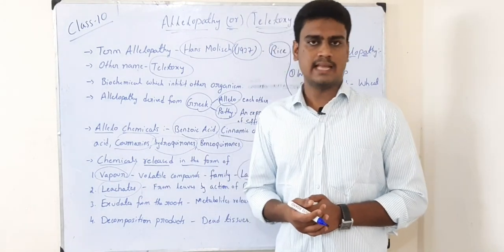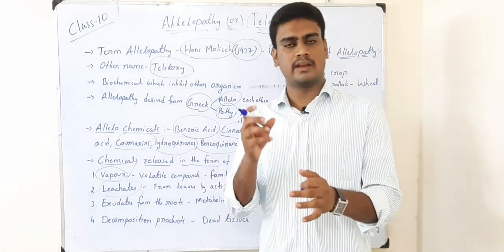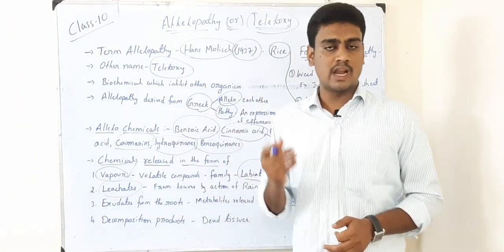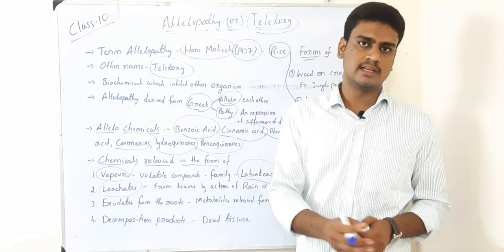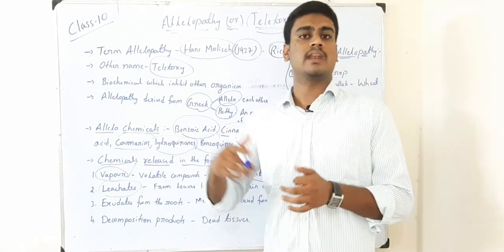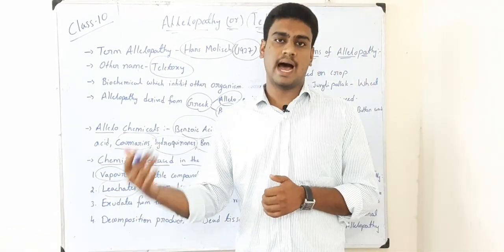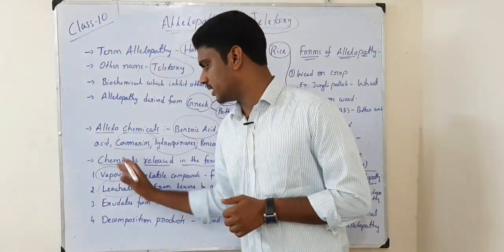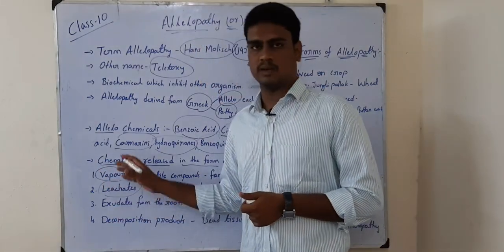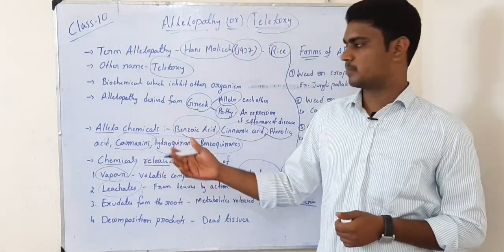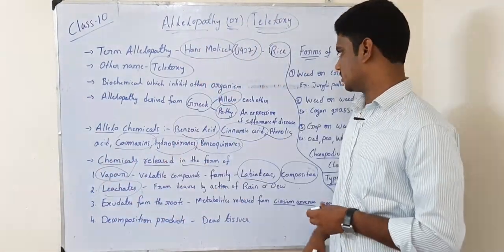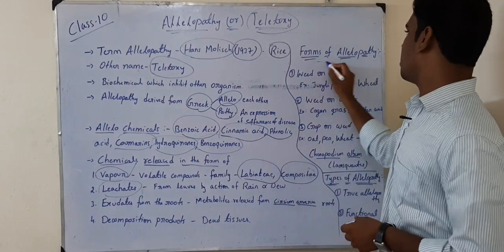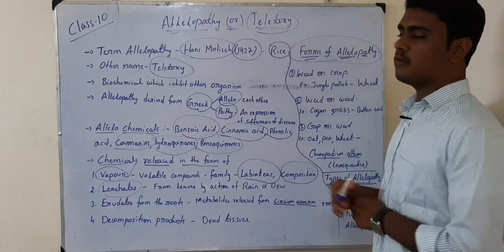The last form is decomposition products. After the death of a plant, the plant tissues contain allelochemicals, and those chemicals can affect other plants. So these are the four major forms by which allelochemicals affect other plants.